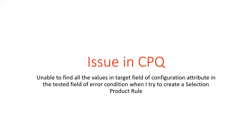Hi everyone. In today's video we are quickly going to look at an issue in CPQ. The issue is that we have certain values in the target field of a configuration attribute, but those values are not available in the error condition record's tested field when we try to create a selection product rule. Let's see what the issue is and how we can solve it.